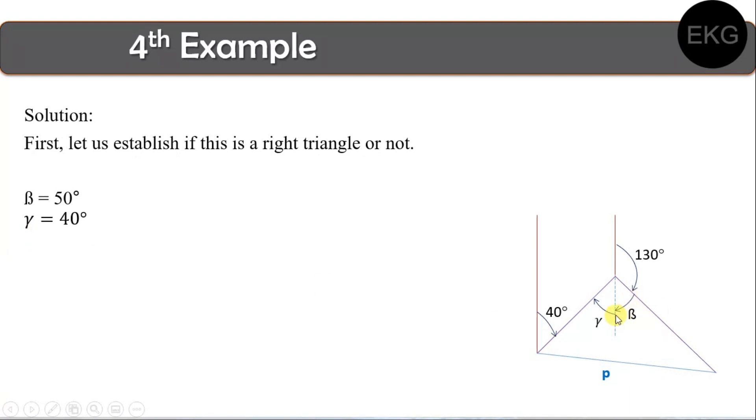Now, since beta plus gamma, pag-i-add natin yan, will have a 90 degree angle. Therefore, this triangle na nabuo natin is actually a right triangle. So, ano bang purpose na? Bakit natin kailangan i-establish? Because, yung mga formulas na natutunan natin, yung mga trigonometric function values, yung Pythagorean theorem, is only applicable to this particular triangle.